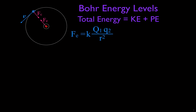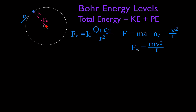We can calculate the electric force using Coulomb's law: F equals Coulomb's constant times the magnitude of one charge (the proton) times the magnitude of the other charge (the electron), divided by the square of the distance between them. For the centripetal force, we start with Newton's second law, F equals ma. An object traveling in a circular path has centripetal acceleration equal to v² over r, so the centripetal force is mv² over r.